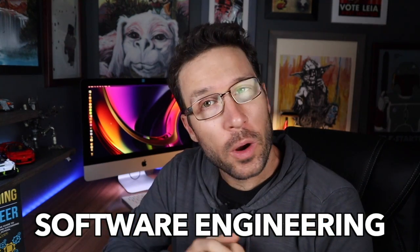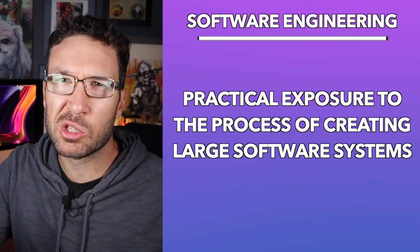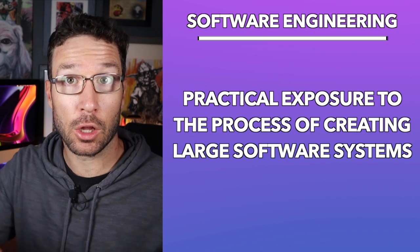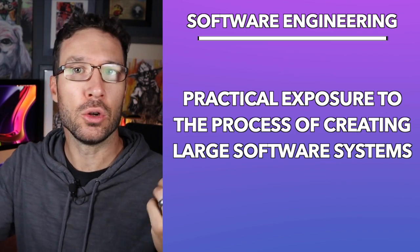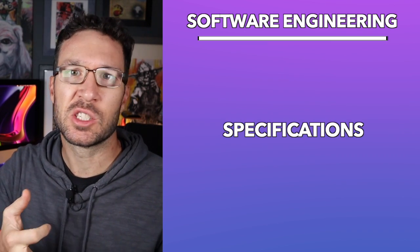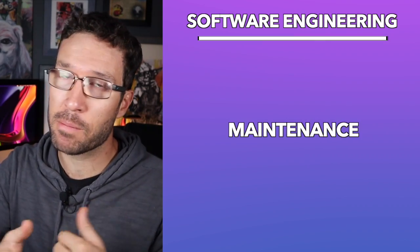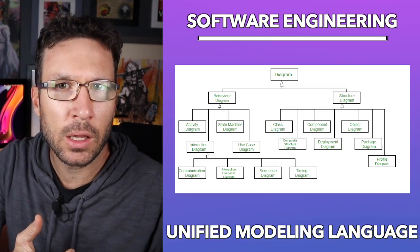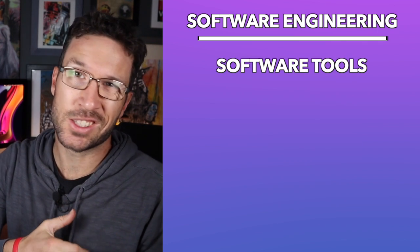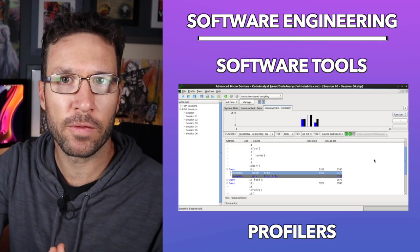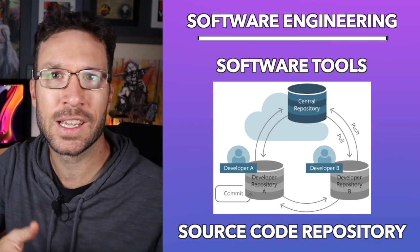Next up we have software engineering. In this course you're going to get practical exposure to the process of creating large software systems, including design, requirements, specifications, implementation, testing, and maintenance. Much of the time will be spent working as a team modifying pre-existing software systems, which is appropriate because that's a large majority of what you'll be doing in industry. Other topics include unified modeling language, software process, and software tools like debuggers, profilers, source code repositories, and test harnesses.